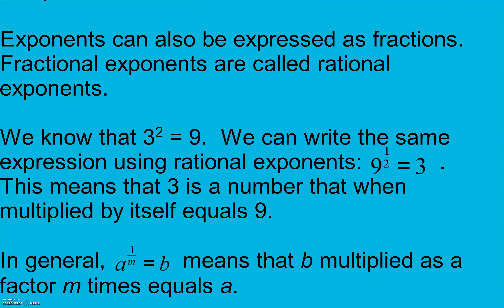Continuing on in section 7.2, exponents can also be expressed as fractions. Fractional exponents are called rational exponents. We know that 3 squared equals 9. We can write the same expression using rational exponents — we can say 9 to the 1 half power equals 3. That means there are going to be two things multiplied together to get 9, and both of those things are 3's.